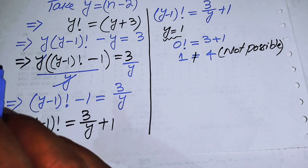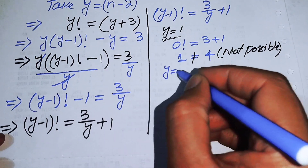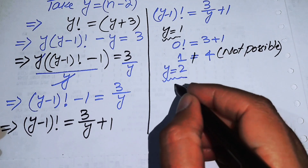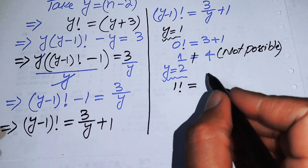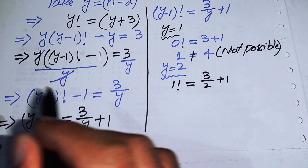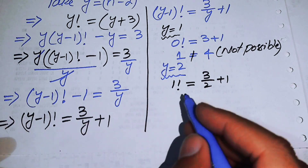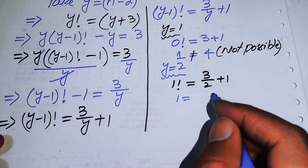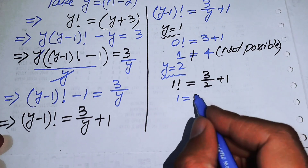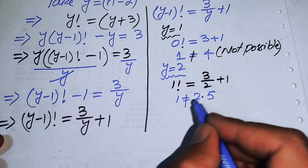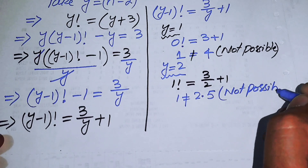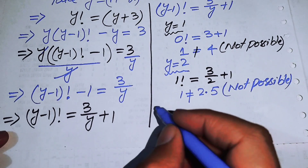We now check y equals 2. Substituting gives 1 factorial on the left-hand side, and 3/2 plus 1 on the right-hand side. Since 1 factorial equals 1 and 3/2 plus 1 equals 2.5, these are not equal, so this is again not possible and we reject this value.